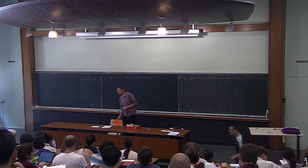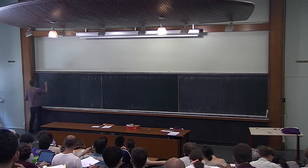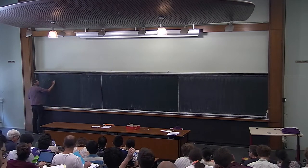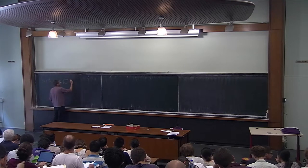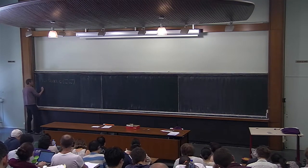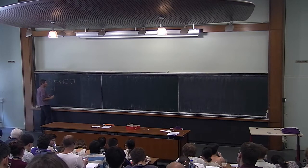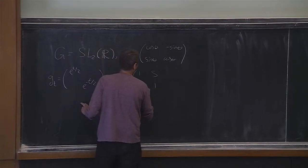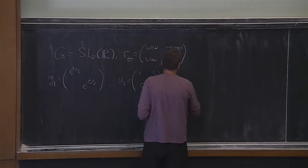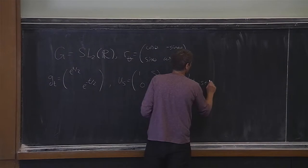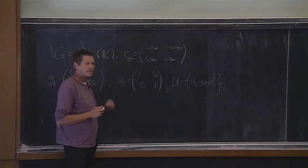Thanks to the organizers. I'll begin by recalling some notation from John's lecture. Throughout this talk, G will denote SL2R, R_theta will be the rotation group, G_T will be the diagonal group. There's a new player we will work with today: upper triangular matrices with eigenvalues 1, which define a one-parameter group I'll denote by U. They define a flow on moduli space called the horocycle flow.